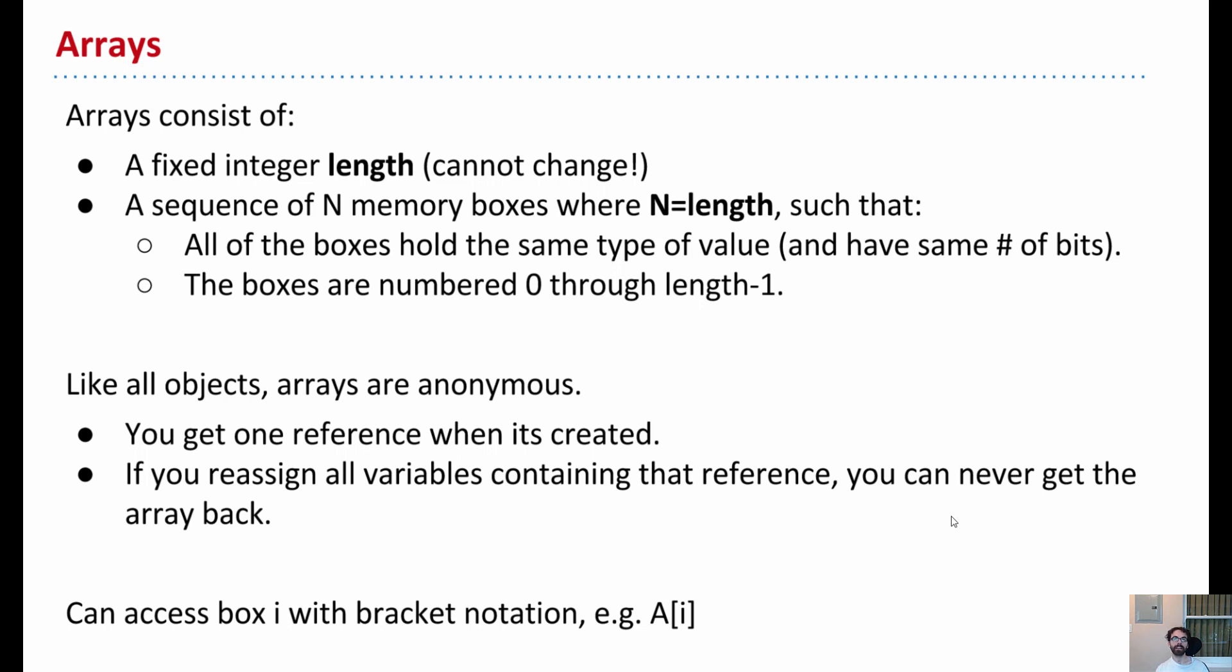The second thing you get along with your array is a sequence of boxes. So if you ask for 5 ints, you will get 5 boxes. And each of those boxes will be the exact size for a certain type. So you can't have a mixed array where some are doubles, some are ints, or some are shorts. That's not allowed. You just get 5 boxes of one type.